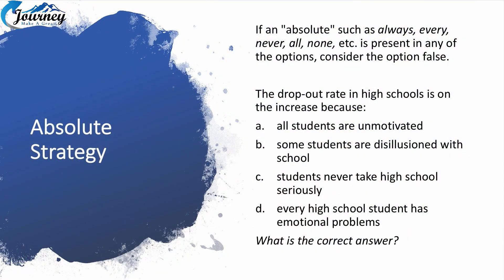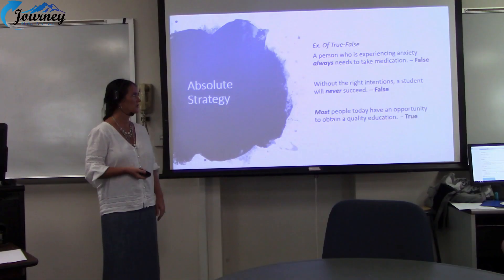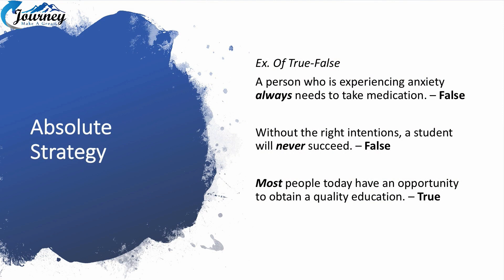The Absolute Strategy: if an absolute word — like always, never, every, none, all — is in one of the choices, consider it false. Example: 'The dropout rate in high schools is at an increase because...' — the correct answer is the only one that said 'some.' All the others had absolute words. True/false example: 'A person who is experiencing anxiety always needs to take medication' — go with false because of the absolute 'always.' 'Without the right intentions, a student will never succeed' — go with false because of the absolute 'never.' 'Most people today have an opportunity to obtain a quality education' — go with true, because 'most' is not an absolute.